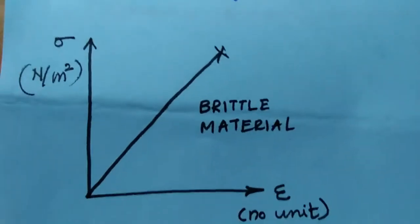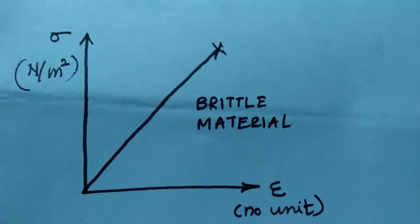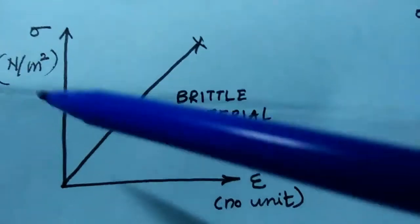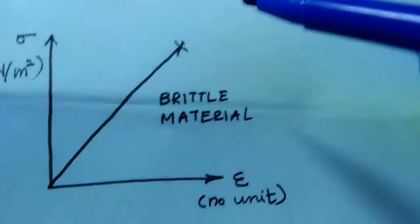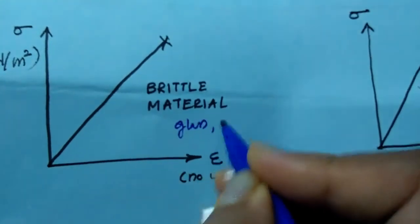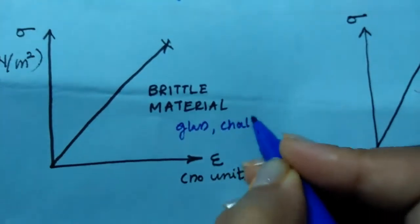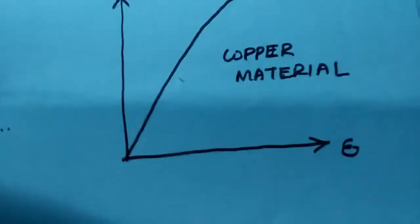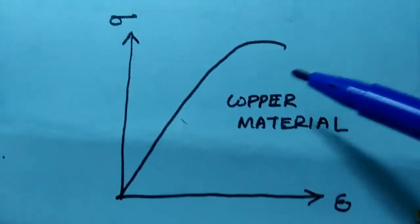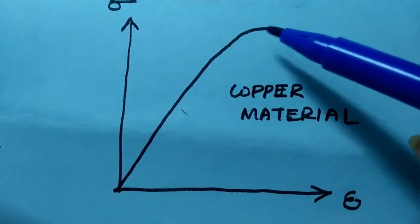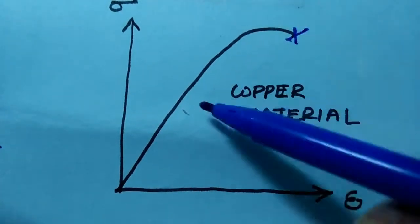Now let's look at the brittle material curve. When stress is plotted against strain for a brittle material, the line is a perfectly linear straight line — examples of brittle materials are glass and chalk. Now for copper: in the copper curve there is no clear necking region — it rises to a maximum stress point and then ruptures directly. That is the property of copper material.